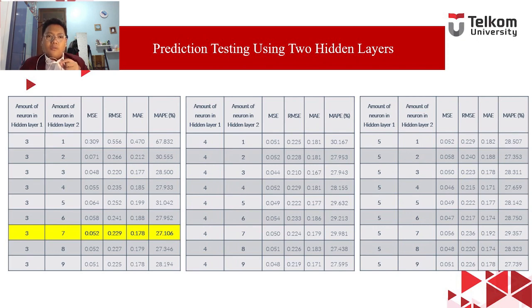This slide shows the result of using two hidden layers, where we configured several different amounts of neurons for each hidden layer. These were all the best results for 100 epochs for each configuration. The best result was shown using three neurons in hidden layer 1 and seven neurons in hidden layer 2, giving a MAPE of 27.106% — even better than our one hidden layer configuration.